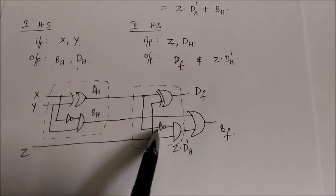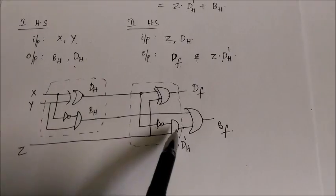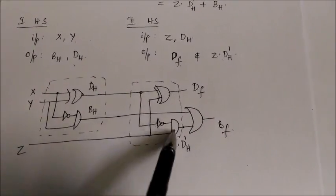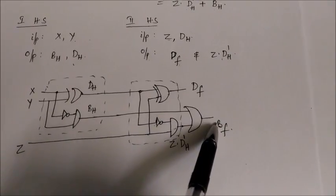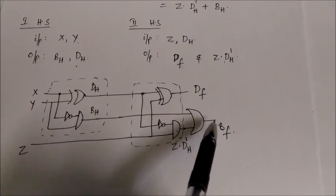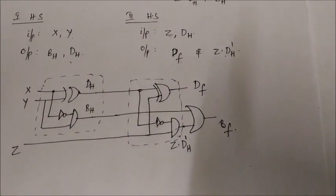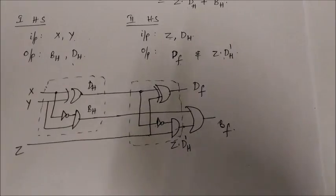So dh bar z will be the output of this AND gate. So when we add these borrow and this borrow, we will get borrow of final full subtractor. So this is a logic diagram for full subtractor using two half subtractors. Thank you.